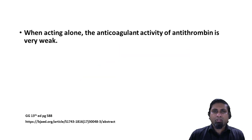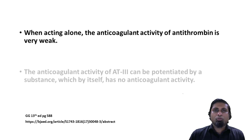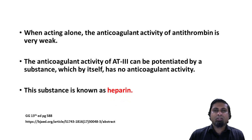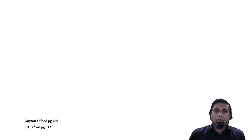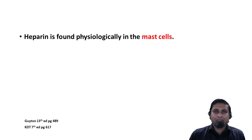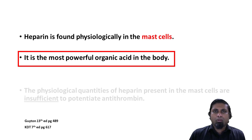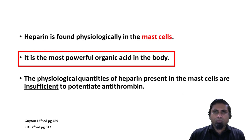The anticoagulant activity of antithrombin 3 is very weak when it acts alone. However, the anticoagulant activity of antithrombin 3 can be greatly potentiated by a substance which by itself has no intrinsic anticoagulant activity whatsoever. The name of the substance is heparin. Heparin is found physiologically in mast cells. It is the most powerful organic acid in the human body. The physiological quantities of heparin found in the mast cells are insufficient to activate antithrombin.